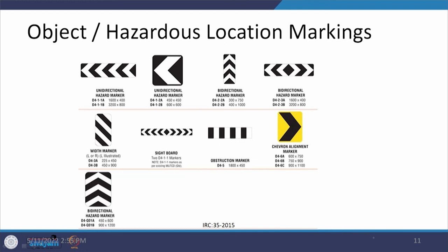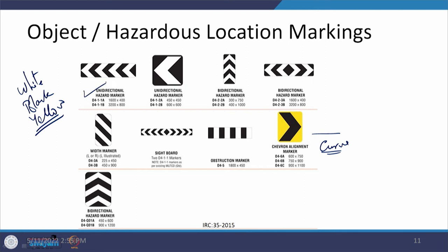The next set of markings are the object or hazardous location markings. There are different sets depending on what needs to be defined and in what form. Mostly white, black, and yellow are used in various combinations. White and black is common in most cases, while black and yellow is used on curved sections — provided at a certain distance above the pavement surface — to define how a curve takes a turn, indicating unidirectional or bidirectional movements, obstructions, or width constraints at a location.